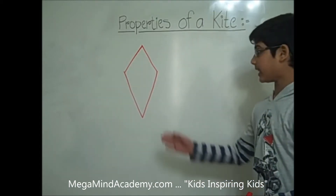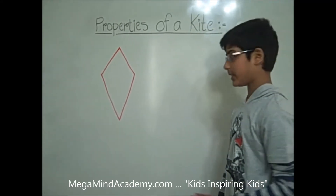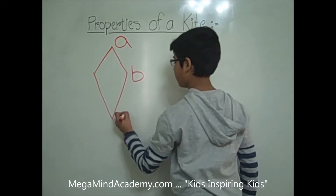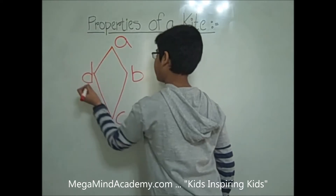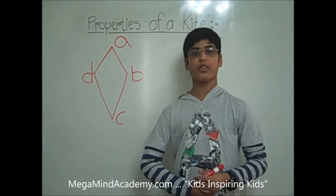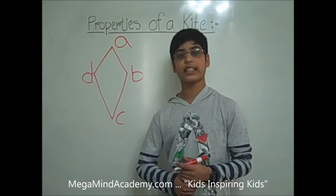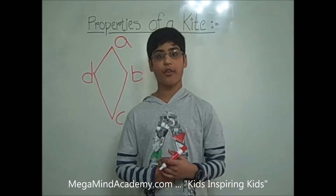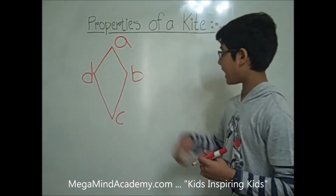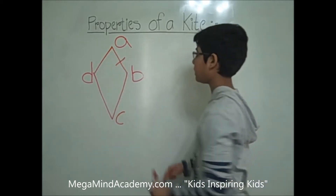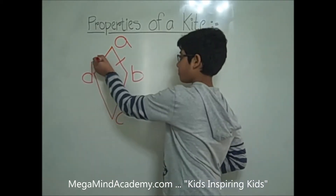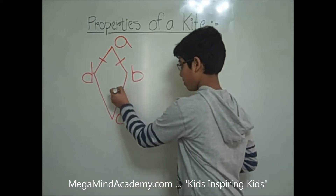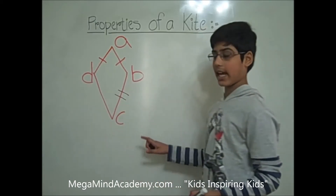Let's say this is our kite. Let's name it A, B, C, D. The kite has two distinct pairs of equal adjacent sides no matter how the kite is formed. So that means side AB is equal to side AD, and side BC is equal to side CD.